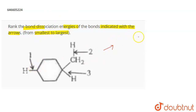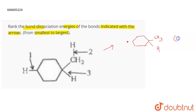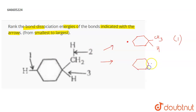When bond one is broken, a CH3 free radical is going to be formed. This is the case when the hydrogen is removed from the first bond. Now if the hydrogen is removed from the second bond, what is going to be formed?